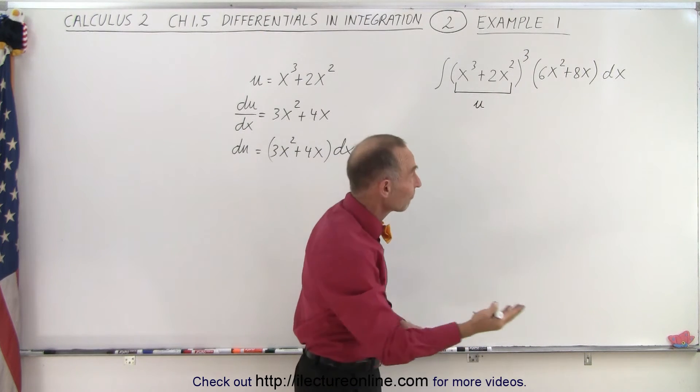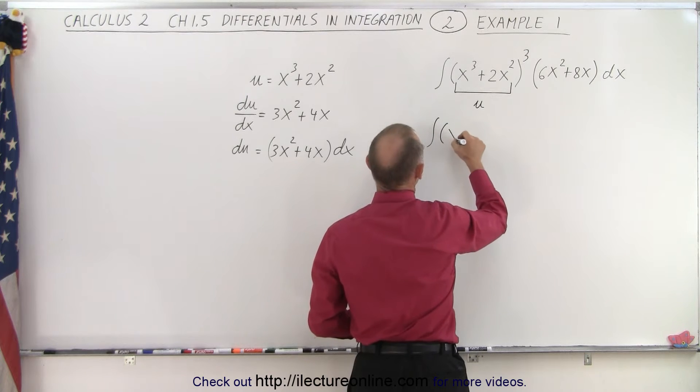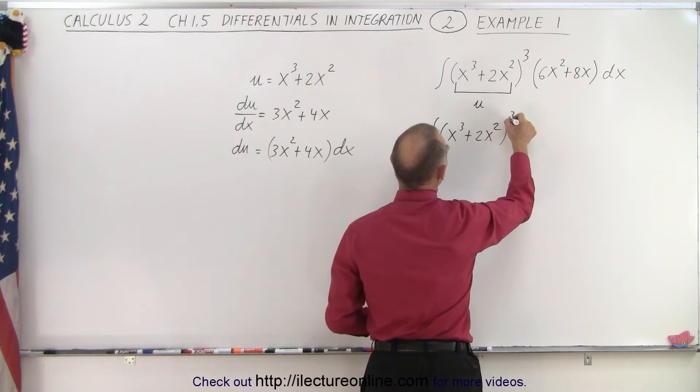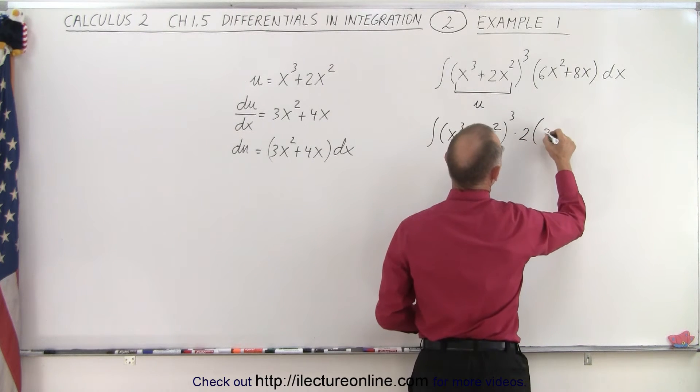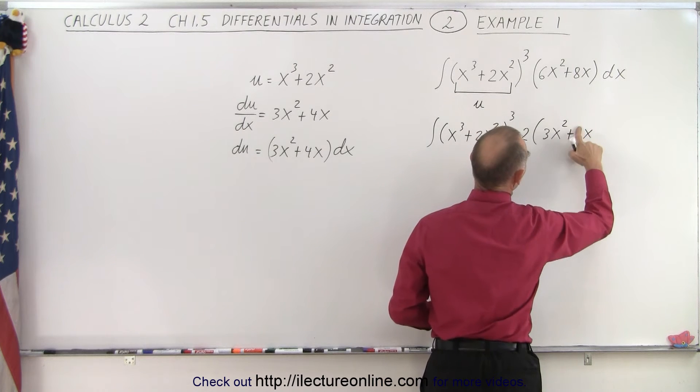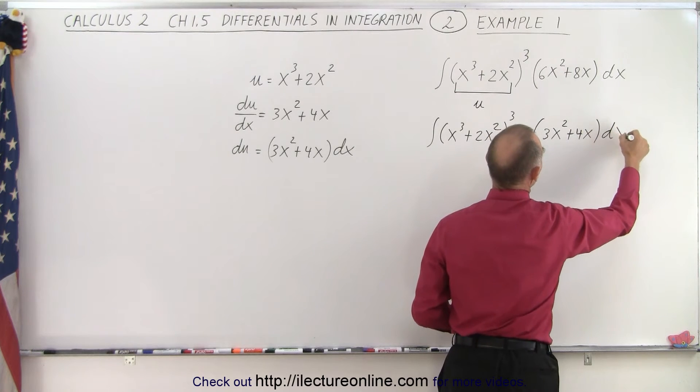So what I can do is factor out a 2, so I can write this as the integral of (x³ + 2x²)³ times 2 times (3x² plus 8x). Not 8x, because I factored out a 2, so this becomes plus 4x times dx.